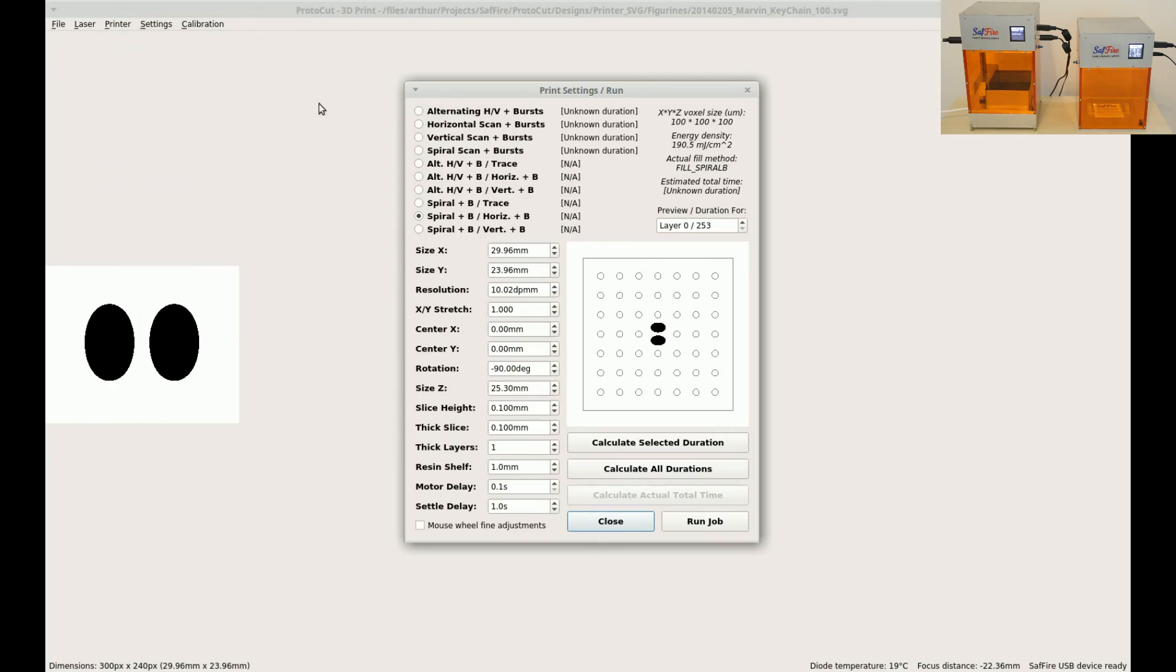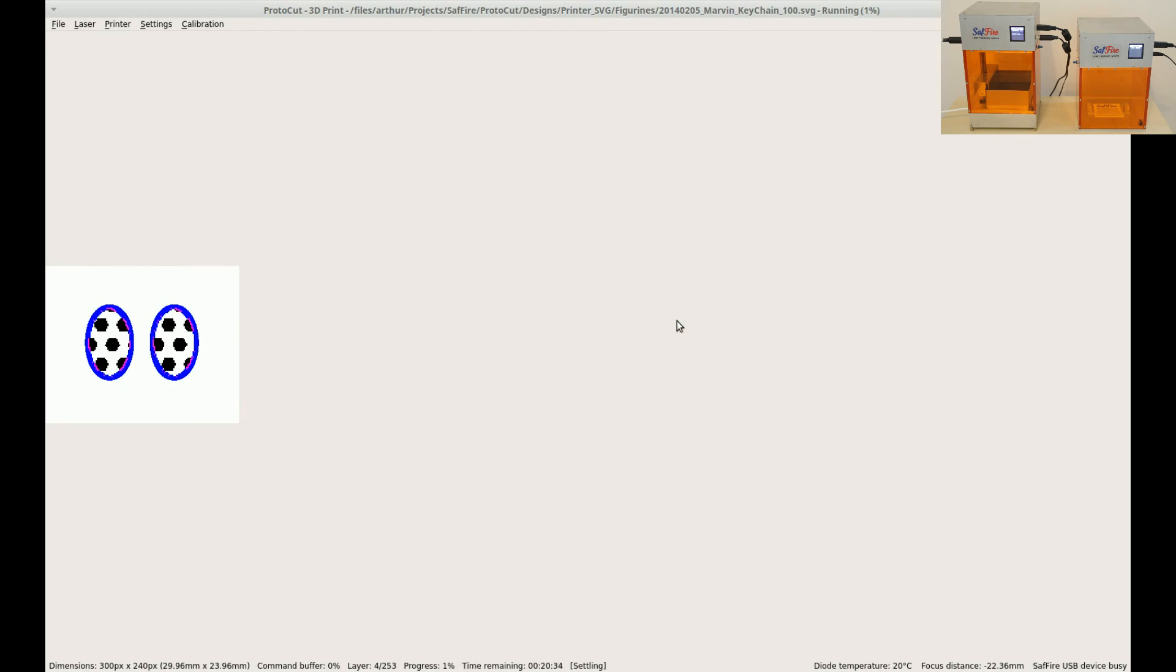All engraving and printing jobs are executed on a schedule dictated by the host computer, and job durations are calculated to within a one second accuracy ahead of time. Laser tracing progress can be watched on the host computer in real time through ProtoCut, similar to software for a CNC mill that shows the current machining path.